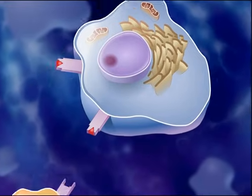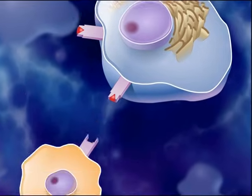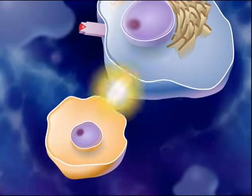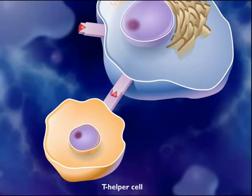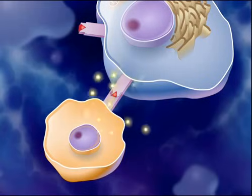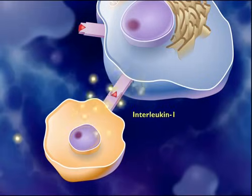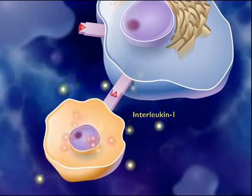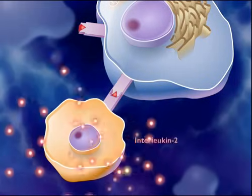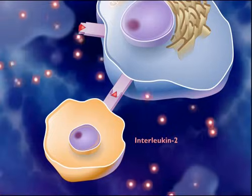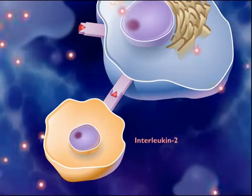An antigen-presenting macrophage interacts with a T-helper cell that can recognize the same antigen. During the interaction, the macrophage releases a chemical alarm signal called interleukin-1, which stimulates the T-helper cell to secrete interleukin-2.